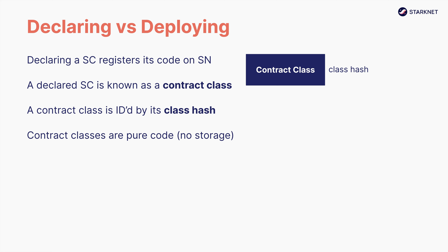This is how a smart contract is complemented by a contract class. The contract class provides the logic for each method, while the smart contract handles the storage of a specific instance that uses that logic. For this reason, contract classes can be used as reusable libraries.